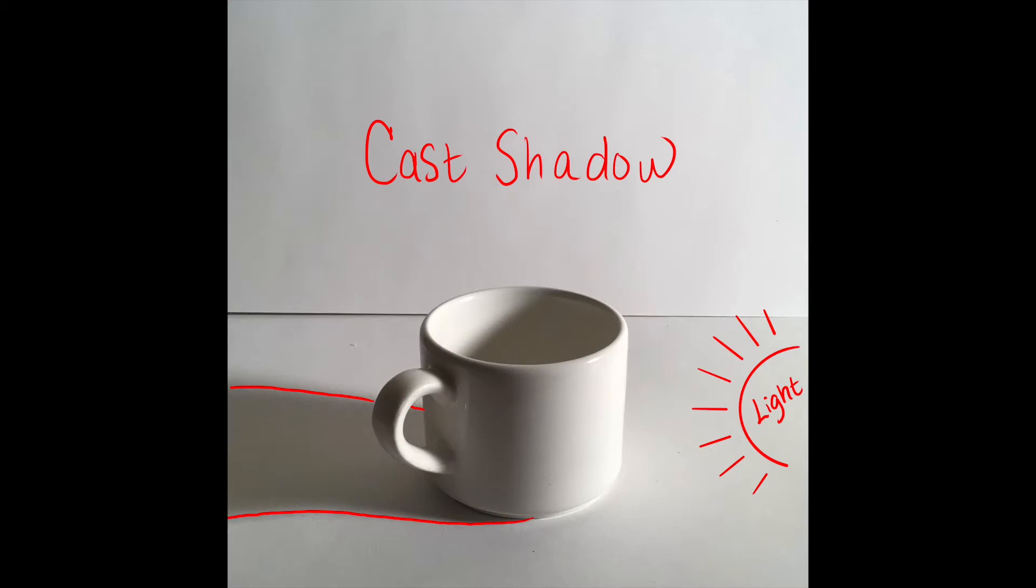Then we have cast shadow, which is created by the object and extends in the direction away from the light source. A successfully drawn cast shadow is governed by the linear rules of perspective while maintaining its unique shape.